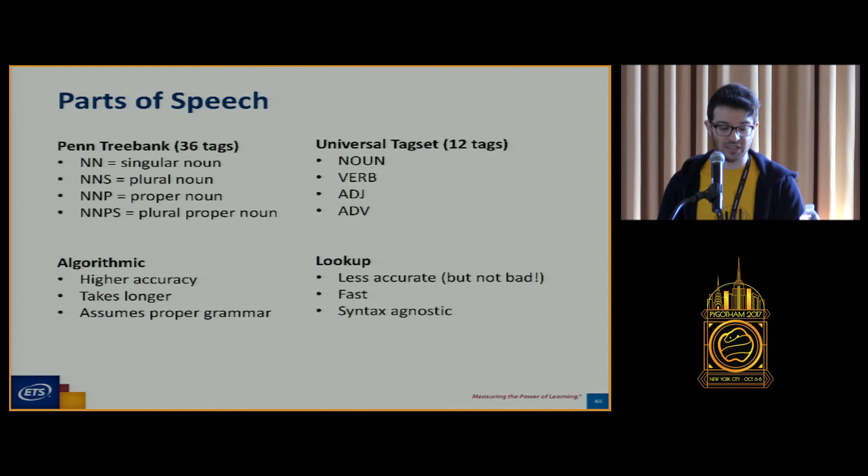The final thing that we're going to need is parts of speech. We don't want to be replacing a noun with a verb, right? Then the sentence that already isn't going to make sense is going to make even less sense. We've got a couple options for this. Penn Treebank is a series of many, many parts of speech. It gives us 36 possible tags. It breaks up nouns into singular nouns, plural nouns, proper nouns, etc. There's also the universal tag set, which is much simpler, but you can potentially replace a plural noun with a singular one.